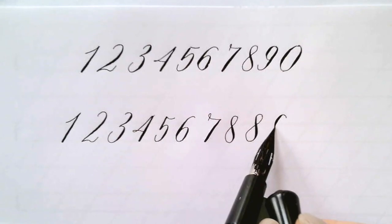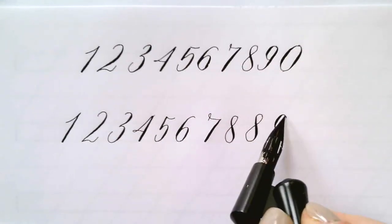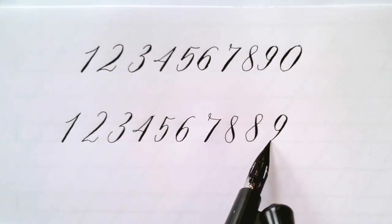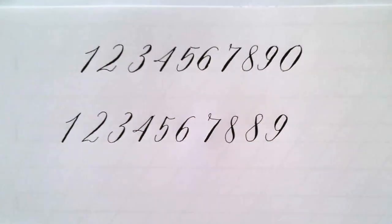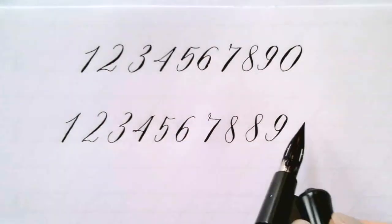The nine is also done in two strokes very much like a six only the other way around. This time you're going to start with the smaller curve first and then add the larger curve second.